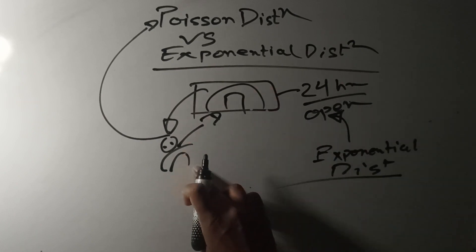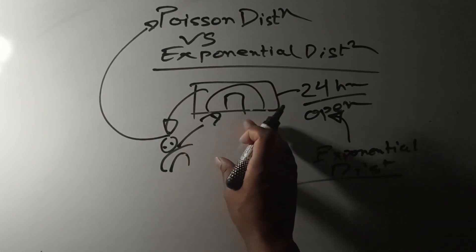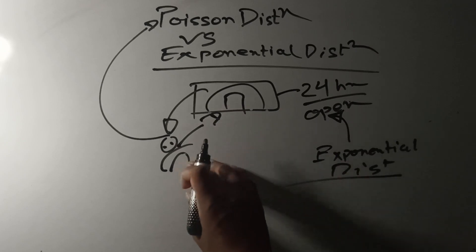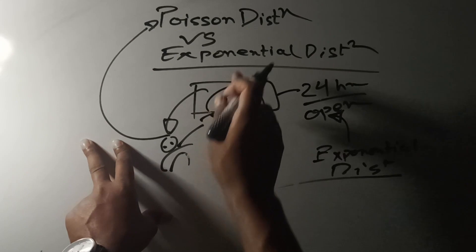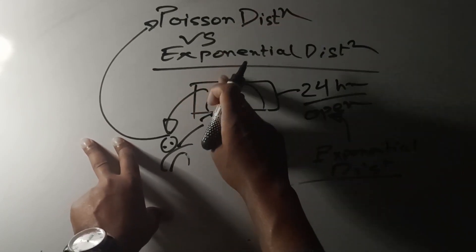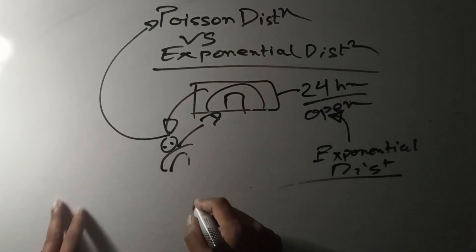in the supermarket are discrete events that follow Poisson distribution. This is the basic difference between Poisson distribution and exponential distribution. Thank you very much.